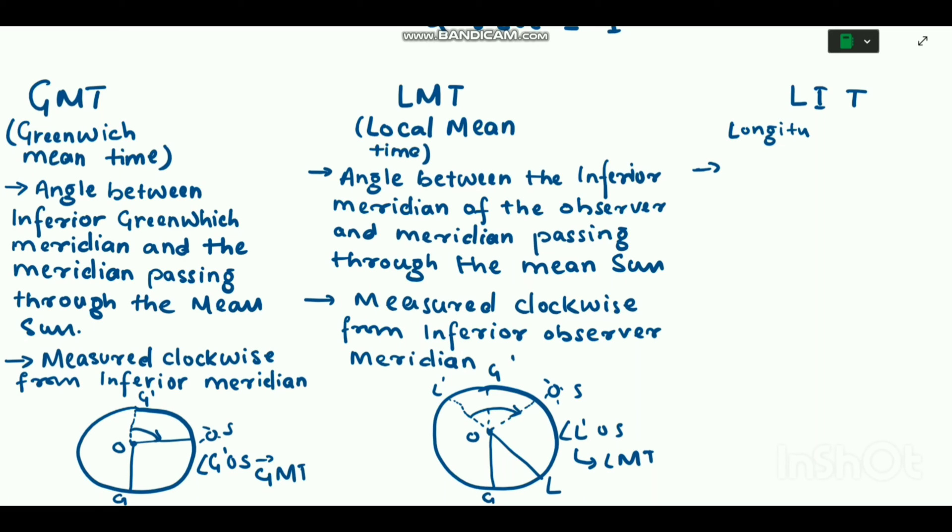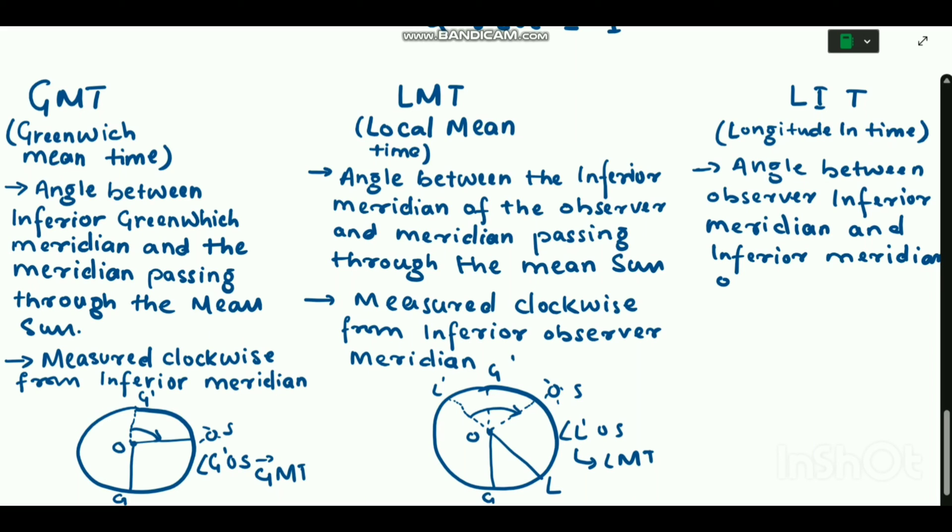LIT is longitude in time. Longitude of the observer, or you can say it is defined as the angle between the observer's inferior meridian and the inferior Greenwich meridian. In the previous figure, angle L dash O G dash is the longitude in time, or you can say LIT is the longitude of the observer. LIT can be converted in time by dividing the longitude by 15 degrees.